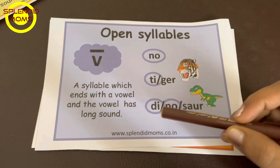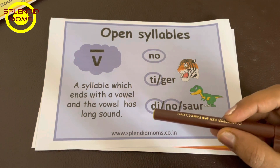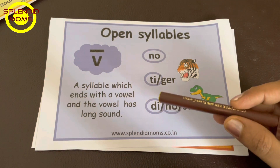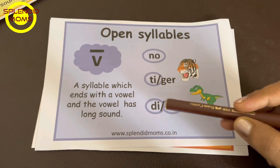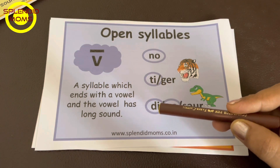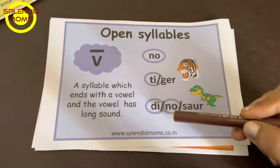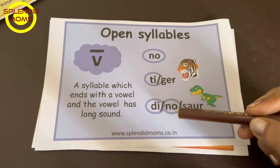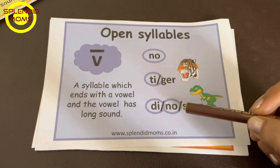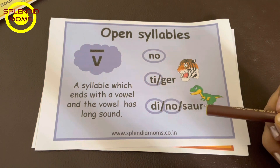Dinosaur. 'Di' is an open syllable because I is taking a long sound here and the syllable is ending with a long vowel. Similarly, N-O, 'no,' is also an open syllable. Dinosaur.